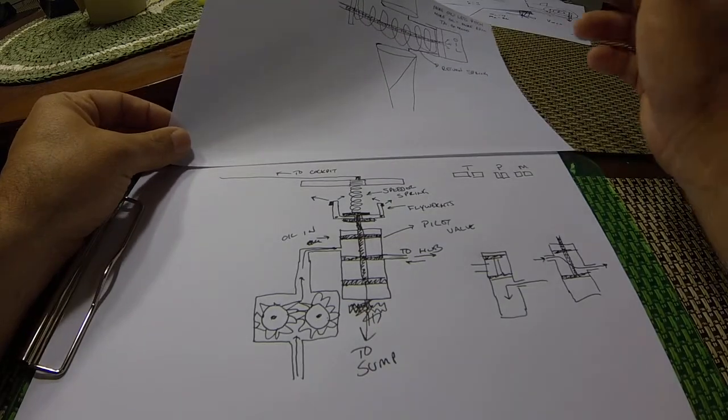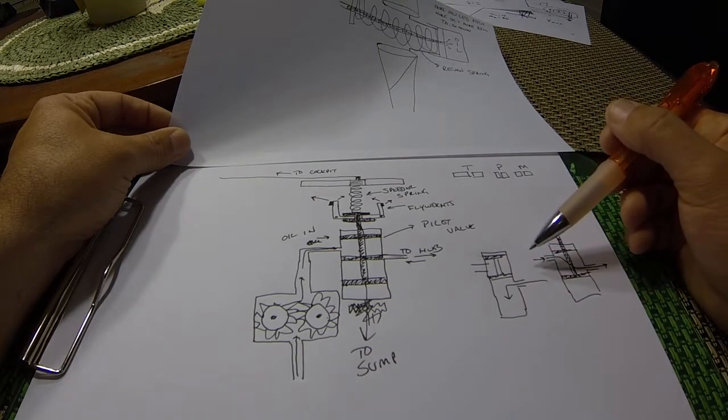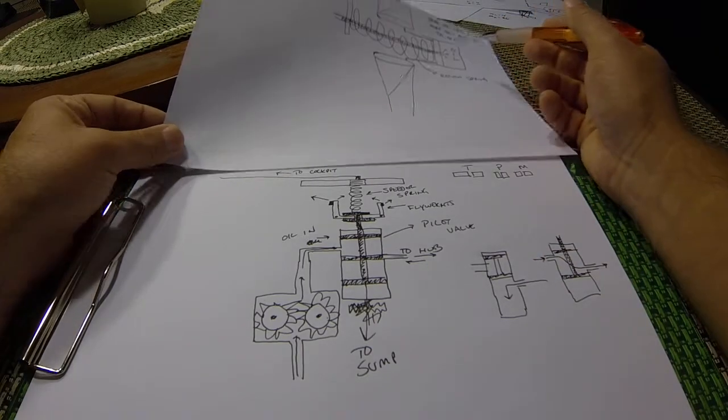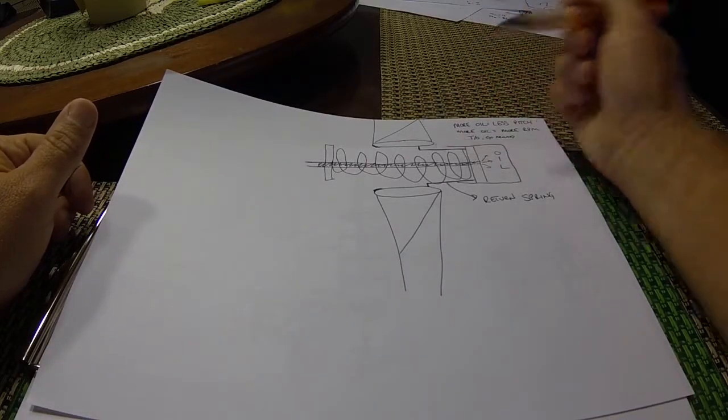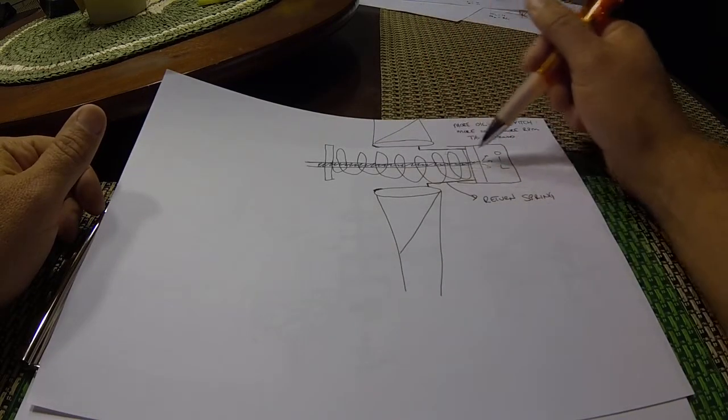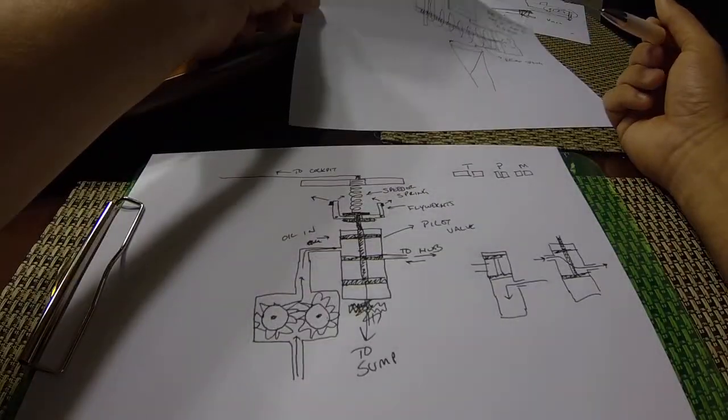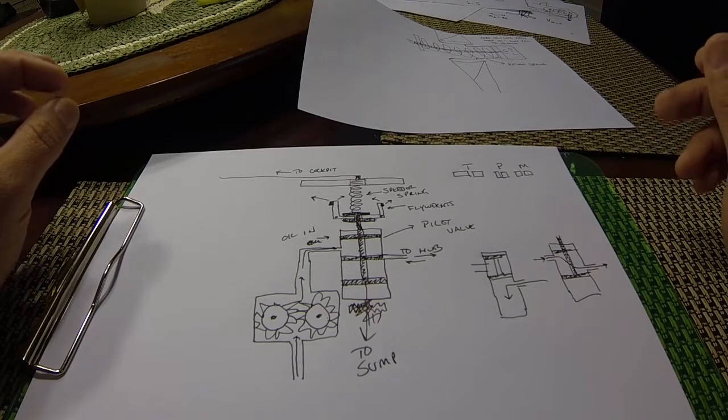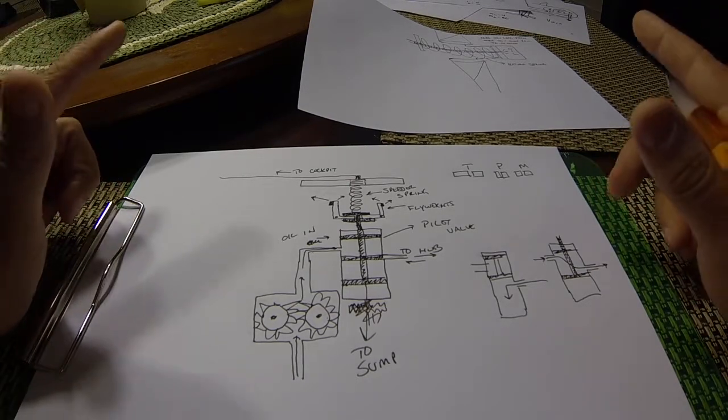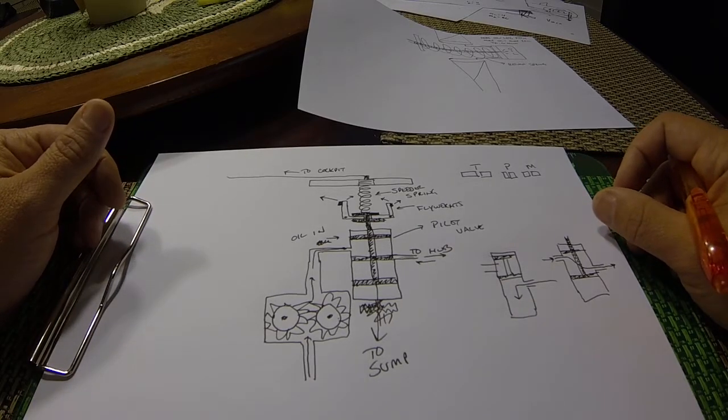Remember, as the main difference being, if we lose oil pressure anywhere along here, this is going to default to the feathered position. The spring is going to overcome the oil pressure and move our propeller blades to feather. Which is what we want because we want to reduce as much drag as possible. Hope that helps. Any questions, leave me a comment, a note, an email. And, good luck!